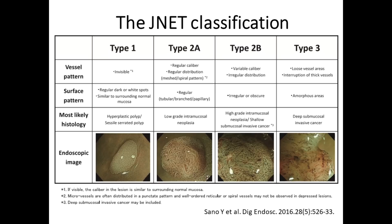The J-Net classification consists of four categories: J-Net Type 1, Type 2A, Type 2B, and Type 3. Each type represents the histological features of the polyps, and they are categorised by focusing on two specific features: the vessel pattern and the surface pattern.